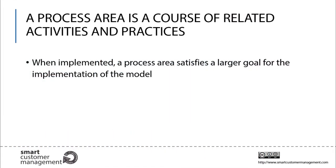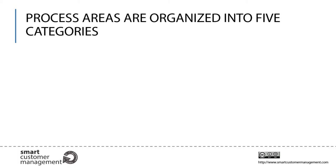A process area is a course of related activities and practices in an area that, when implemented by the organization, contributes to satisfying a larger goal necessary for the implementation of the Smart Customer Management Model. The Smart Customer Management Model process areas are organized into five categories.